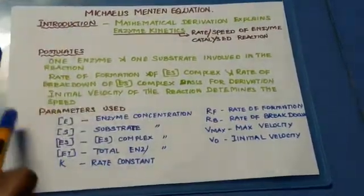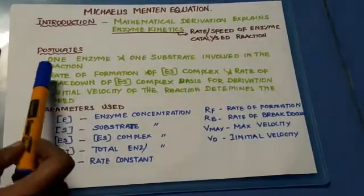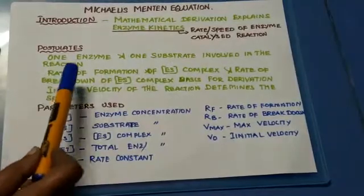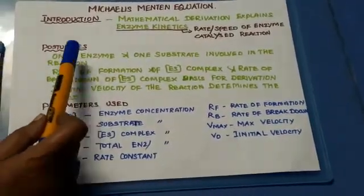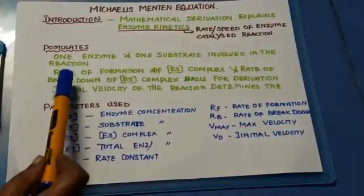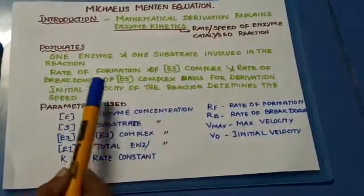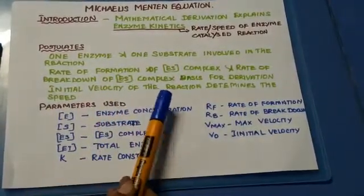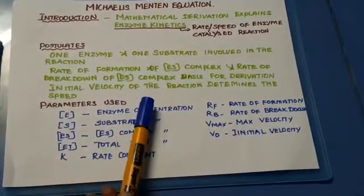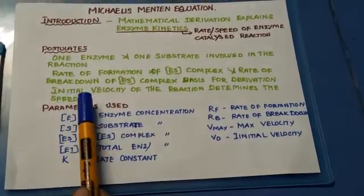He had given some postulates for his derivation. One enzyme and only one substrate is involved in this reaction. In this derivation, the important role is played by the rate of formation of the ES complex and the rate of breakdown of the ES complex. The initial velocity of the reaction determines the speed of that particular enzymatic reaction.